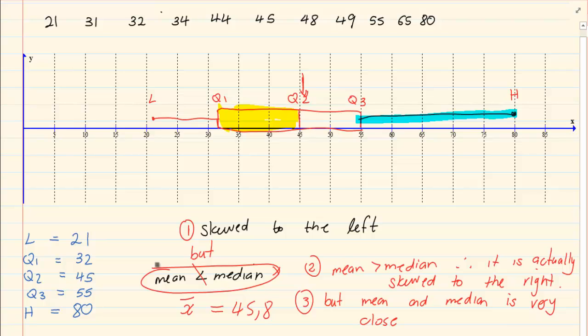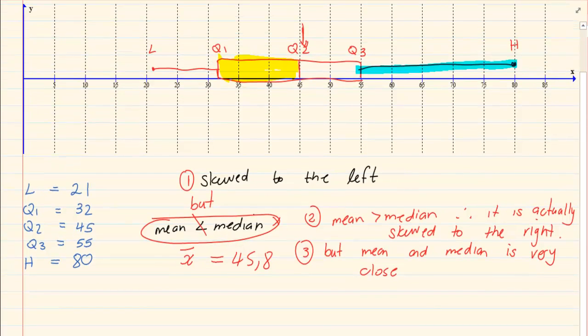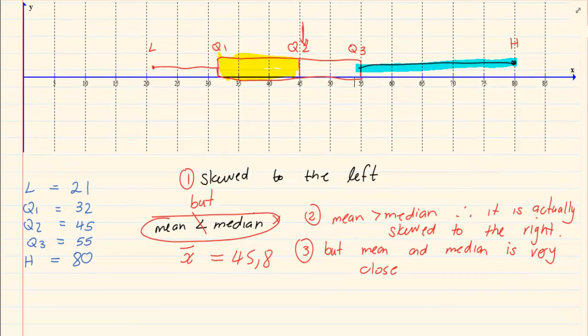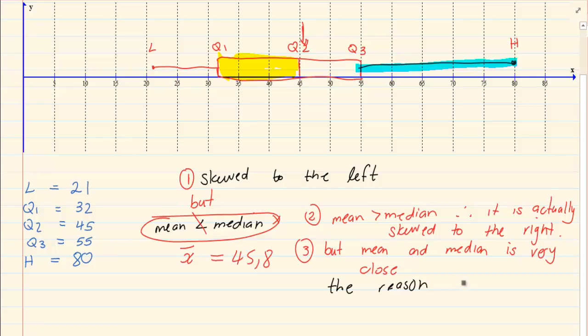The mean and median is very close. So, what are we going to comment on that? If the mean and median is very close. The reason is why. The reason is the outliner.